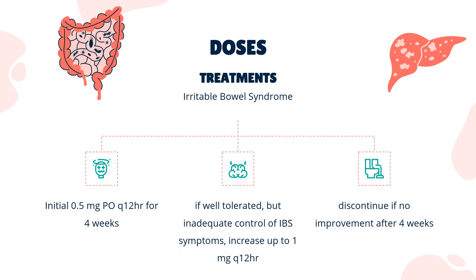Dose — Irritable Bowel Syndrome: Indicated only for women with severe diarrhea-predominant IBS who have chronic IBS symptoms generally lasting 6 months or longer, had anatomic or biochemical abnormalities of the GI tract excluded, and have not responded adequately to conventional therapy. Initial dose: 0.5 mg PO Q12H for 4 weeks. If well-tolerated but with inadequate control of IBS symptoms, increase up to 1 mg Q12H. Discontinue if no improvement after 4 weeks.